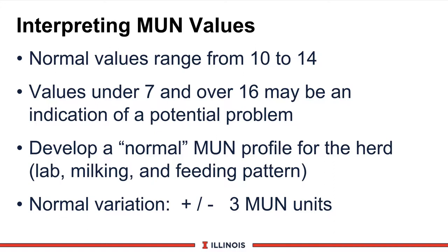Therefore, you want to develop a normal monthly profile on the farm. Every herd will have a different number because of factors such as time of feeding, time of milking, feed selectivity, cow sorting, cow consumption, and how often feeds are pushed up. There is also lab variation — all labs read a little differently, much like forage testing labs. The key question is: what is normal for you?